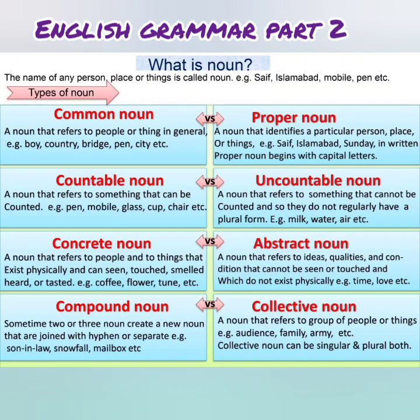The third is countable noun — a noun that refers to something that can be counted. For example: pen, mobile, glass, cup, chair. The fourth is uncountable noun — a noun that refers to something that cannot be counted and does not regularly have a plural form. For example: milk, water, air. These types of nouns have no plural form.